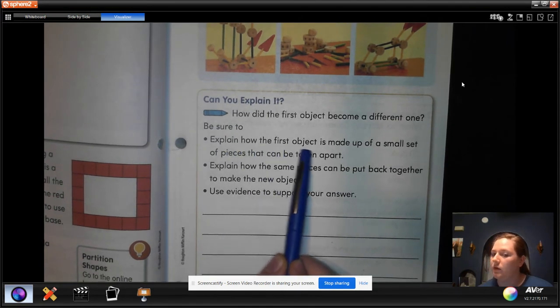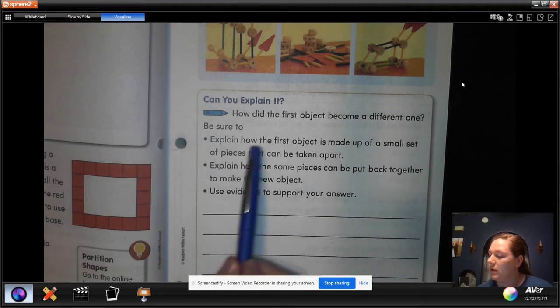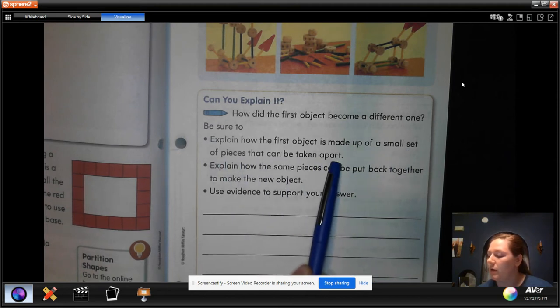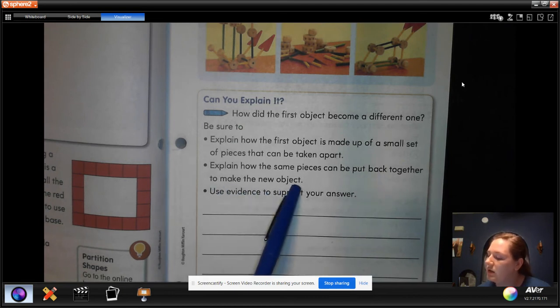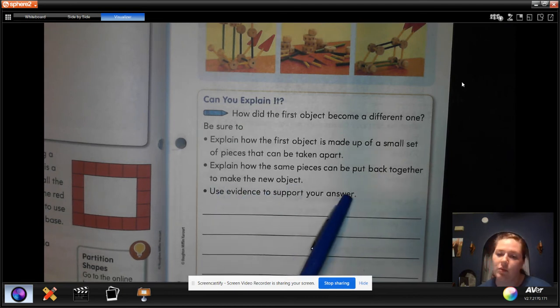You can explain how the first object is made up of a small set of pieces that can be taken apart. Explain how the same pieces can be put together to make the new object and you can use evidence to support your answer.